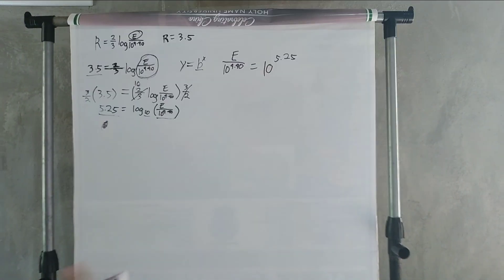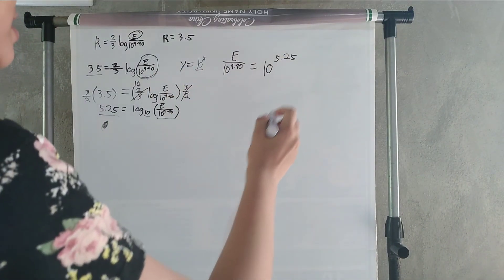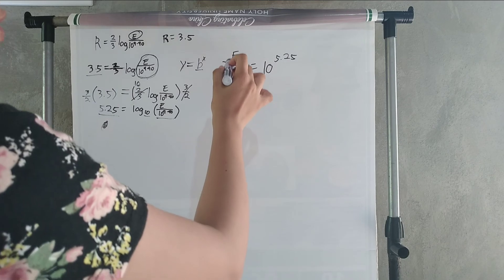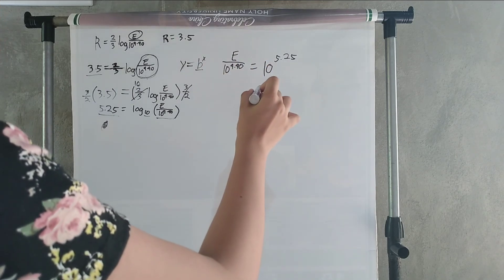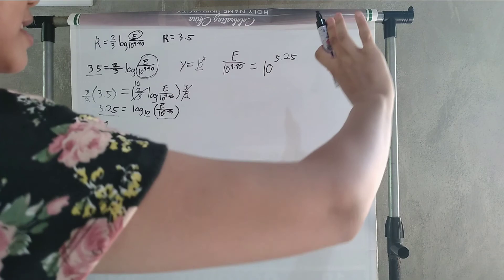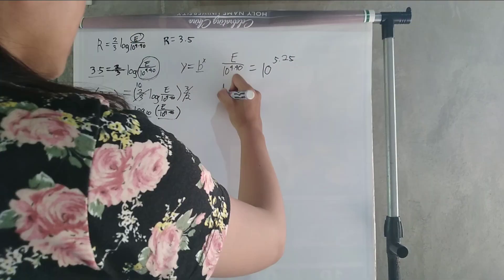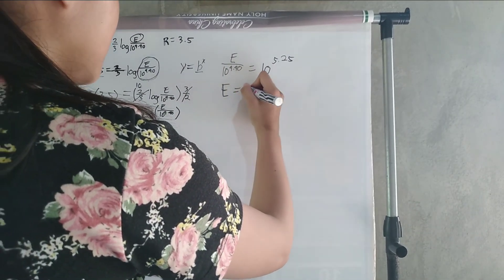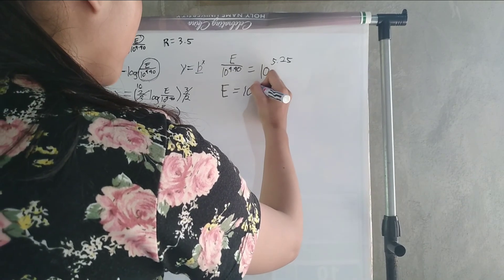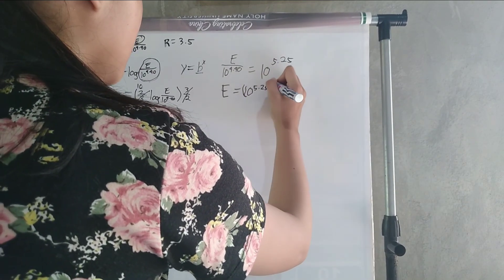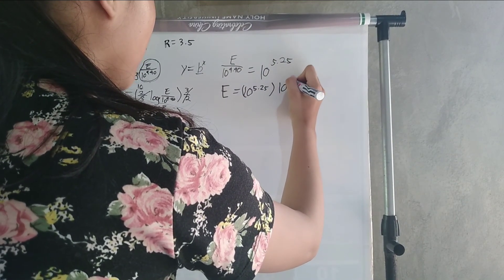To solve this, we have to multiply both sides with 10 to the power of 4.40 so that E will remain to this side and we're going to find the answer on that side. E equals 10 to the power of 5.25 times 10 to the power of 4.40.